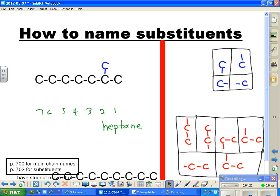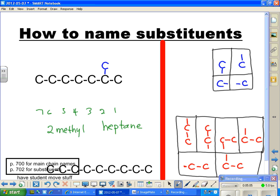Let's name this as it is. I'm going to get this out of the way. So let's name this guy. This is a methyl group. What carbon is he on now? Two. So we're going to say 2-methyl-heptane. That's how we name it.